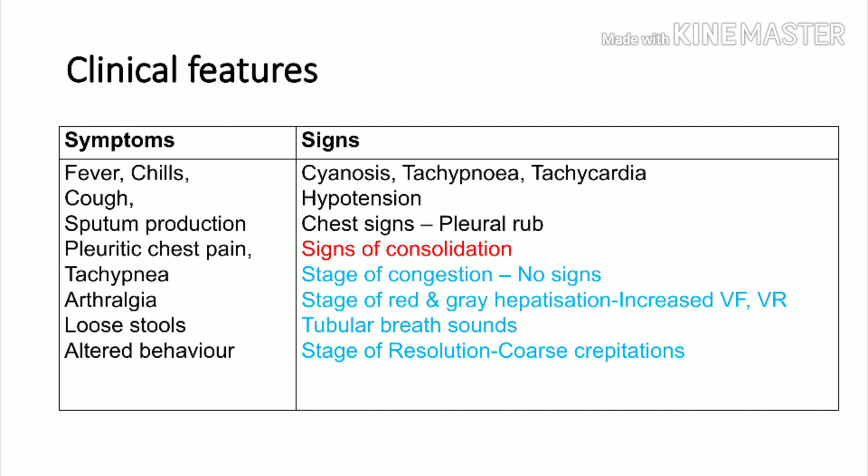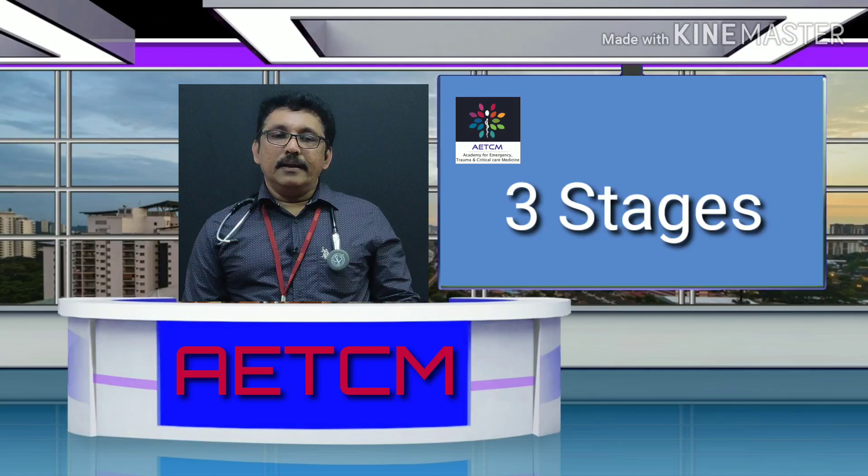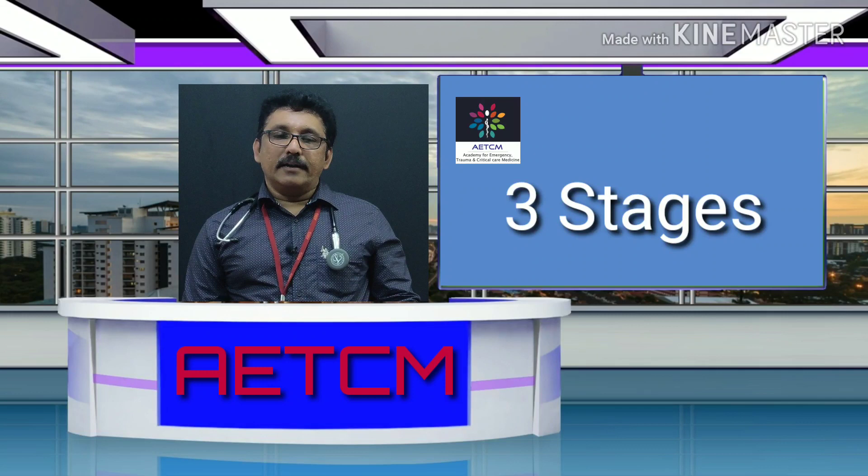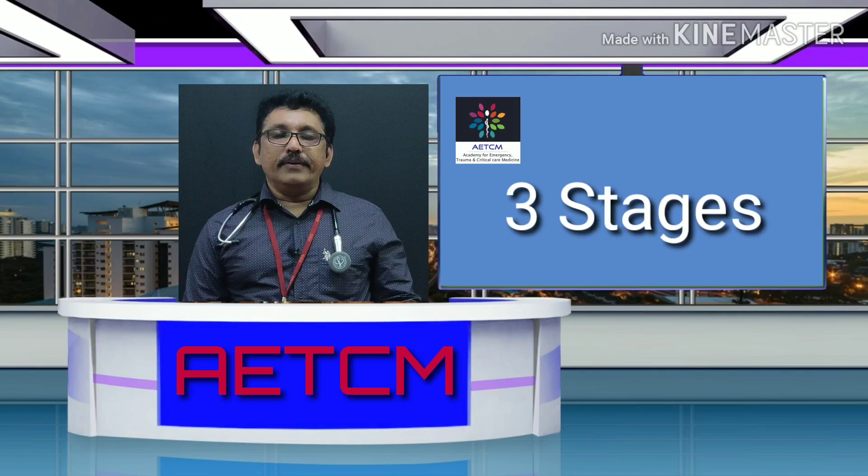There are four stages of classical lobar pneumonia. The first stage is congestion — no signs may be present. The second stage is red hepatization. The third is gray hepatization — the lung becomes solid, producing increased vocal resonance and tubular breath sounds. The fourth stage is resolution — the solid area starts resolving and you get coarse crepitations.